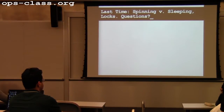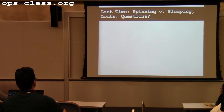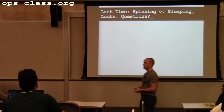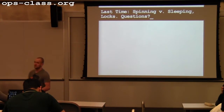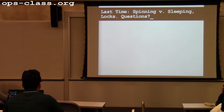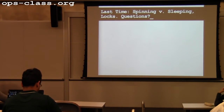Any questions on last time? Last time we looked at two different ways to implement locks. We looked at spin locks, which involve busy waiting and force threads to wait actively until some condition changes. Then we also looked at sleep locks, which are in many cases a more efficient solution that allow threads to sleep and wait to be awakened.